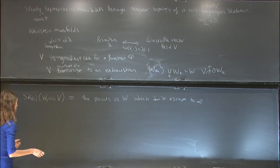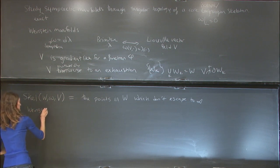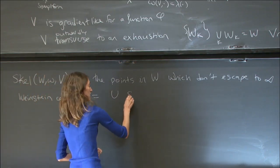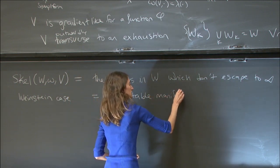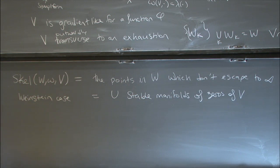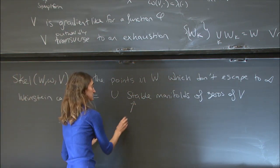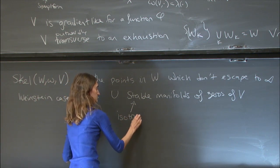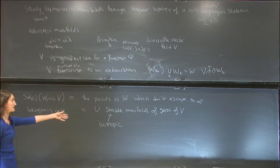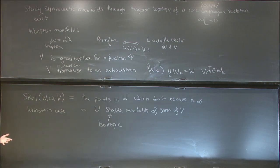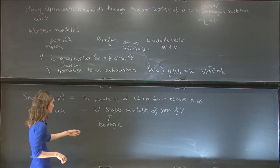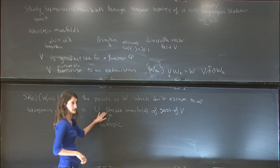The skeleton is an invariant set under V. In the Weinstein case, where we have the taming function, it is given by the union of stable manifolds of the zeros of V. The Liouville condition ensures that each of these stable manifolds is an isotropic submanifold — that's the condition we need to ensure the skeleton doesn't carry symplectic geometric data. The topology comes with a stratification into stable pieces.